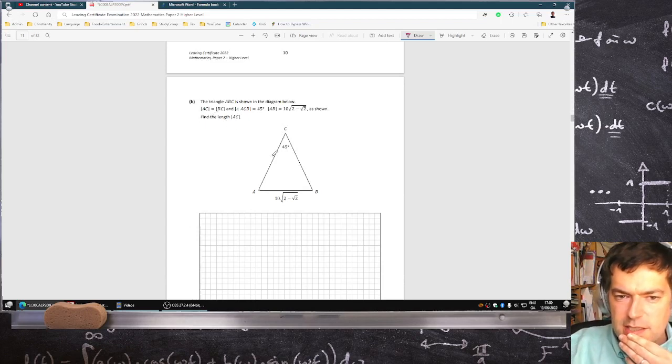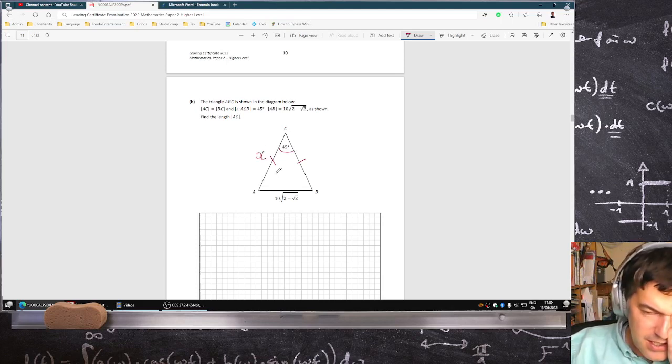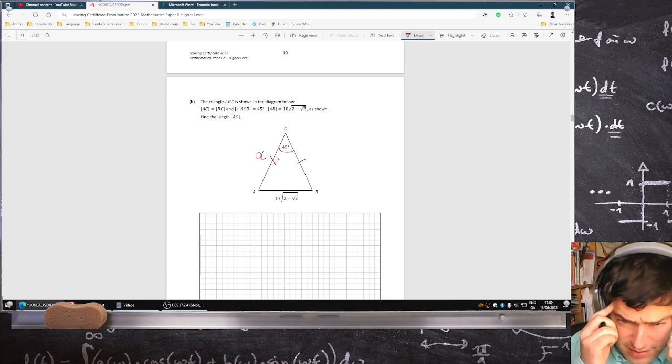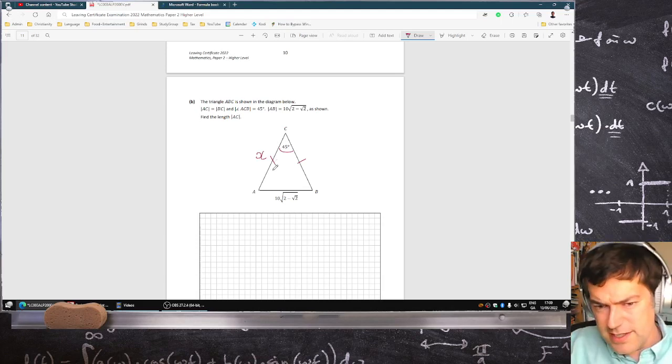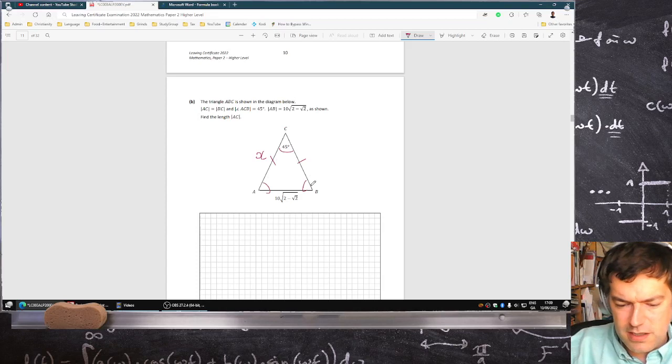AC is equal to BC, so it's isosceles. Angle ACB is 45°, and AB is 10√2 - √2. Find the length of AC. Can I use cosine rule? Well, it is isosceles, so I can know what these angles are: 180 minus 45 divided by 2. AC equals BC.